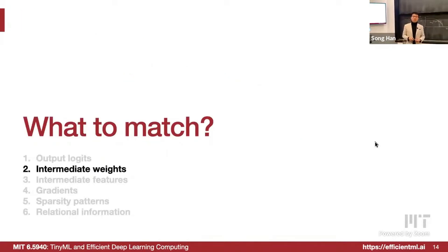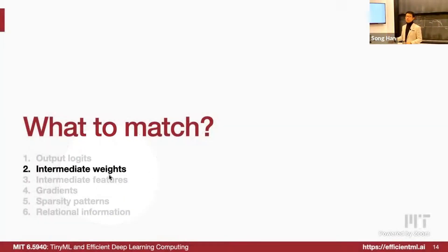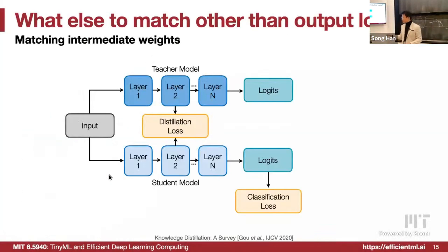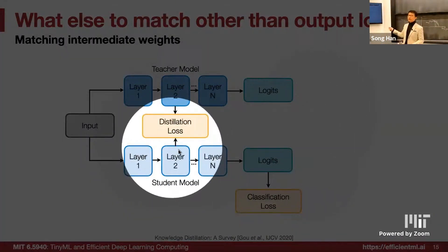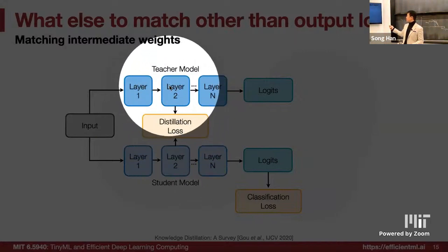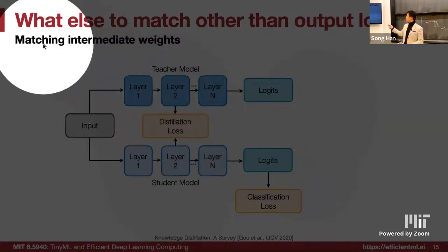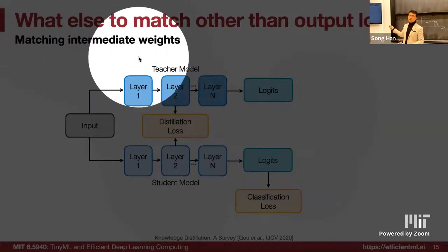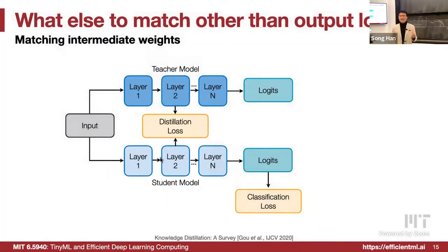What else can we match? Not only the output — we can also try to match the intermediate tensors, including intermediate weights and intermediate features. Now we are matching the intermediate tensors: the teacher model layer two and the student model layer two. We try to match the intermediate weights between these two layers.